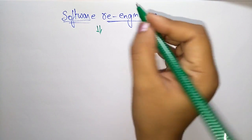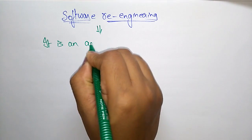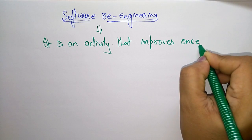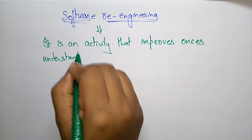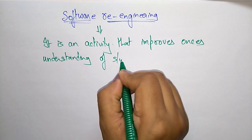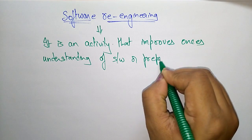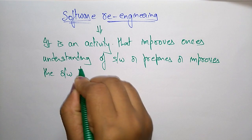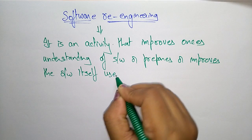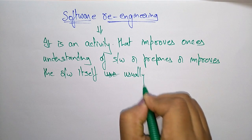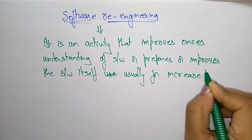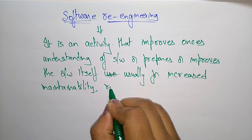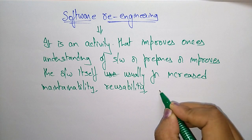Software re-engineering is an activity. Let me write the definition first, later I will explain this. It is an activity that improves one's understanding of software, or prepares or improves the software itself, usually for increased maintainability, reusability, and evolvability.